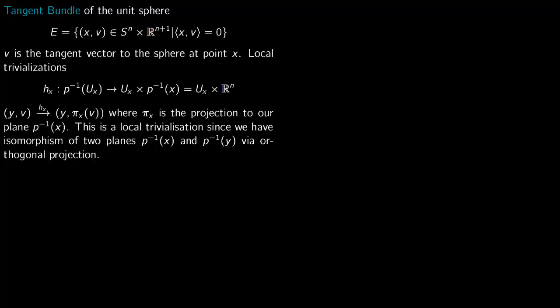Let us give some more examples; these have been taken from Alan Hatcher's book on vector bundles — you can find the link in the description. First is the tangent bundle of the unit sphere S^n. You take a point X from the sphere and a vector V tangent at that point, so their dot product is zero: X is perpendicular to V, where V is the tangent vector to the sphere at point X.